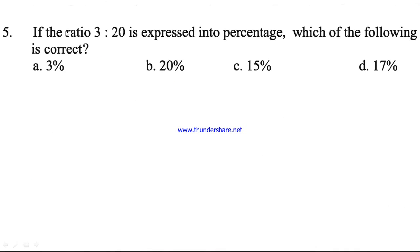Question number 5. If the ratio 3 is to 4 is expressed into percentage, which of the following is correct? 75%. Here you can get 75% by multiplying 100 with 3 and dividing by 4. Then you have to divide 3 into 100 and the result will be 75.